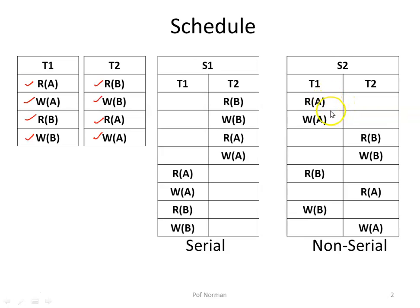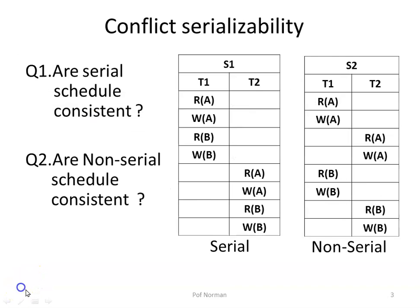These instructions can be placed in any order, but you cannot change the sequence within a transaction. If read comes first followed by write, that order must be preserved. S1 is a serial schedule and S2 is a non-serial schedule due to context switching. Now the main question is: is a serial schedule consistent, and is a non-serial schedule consistent? That means will the database move from one consistent state to another consistent state?